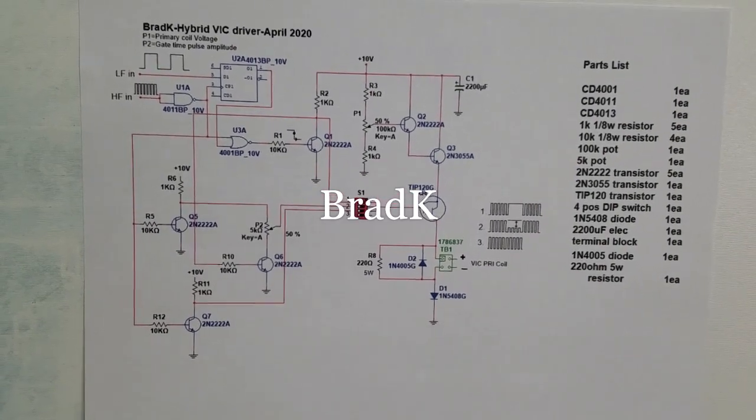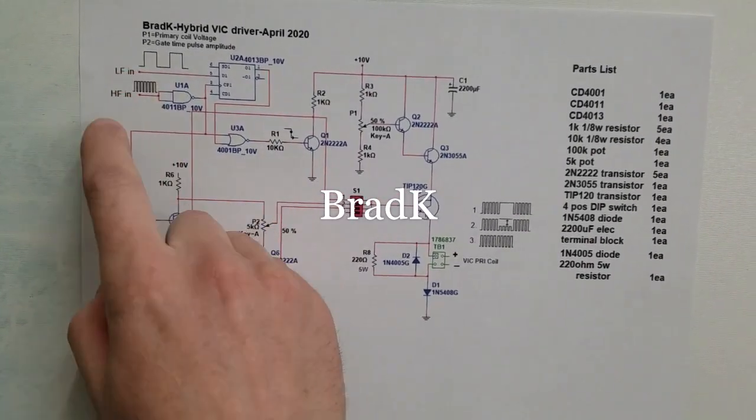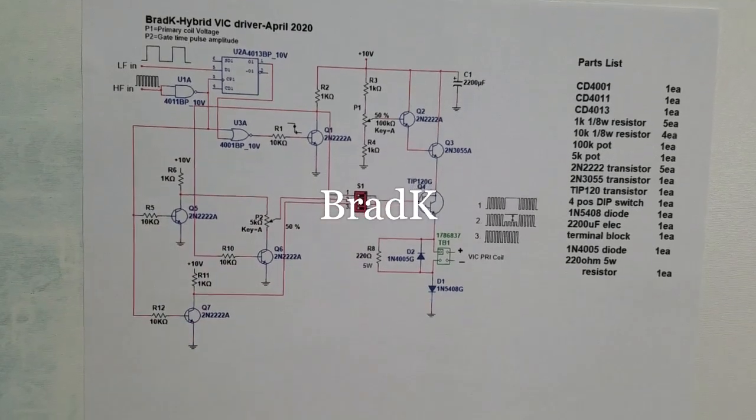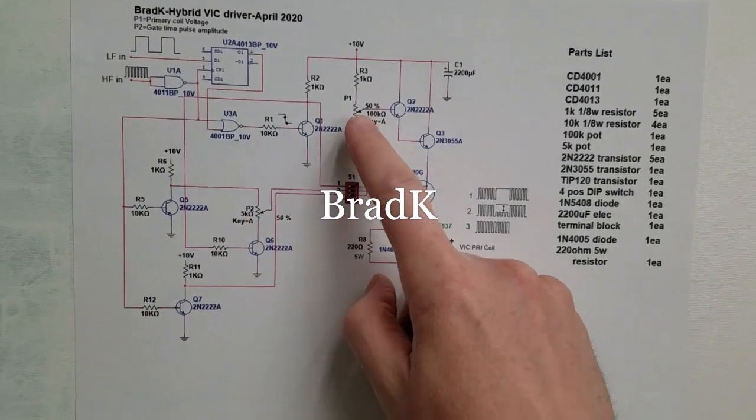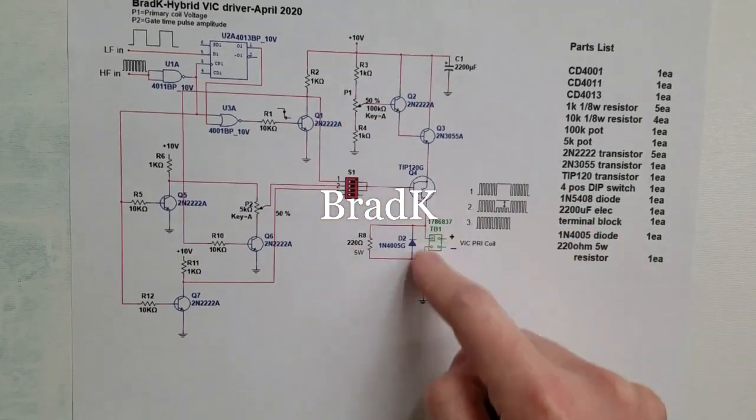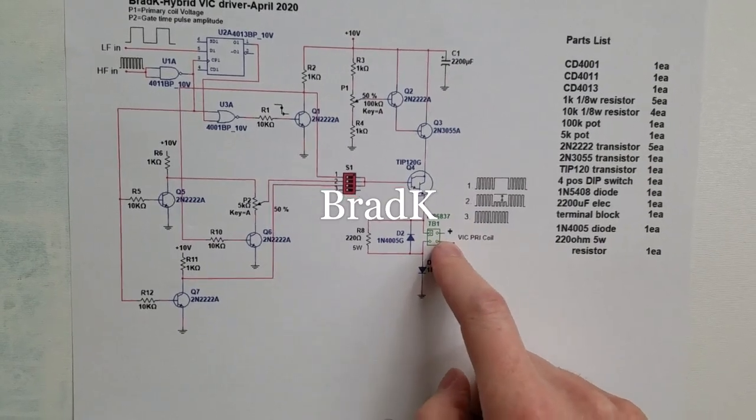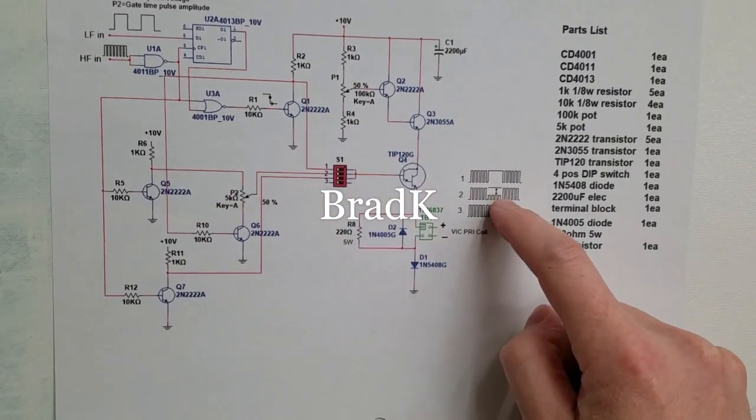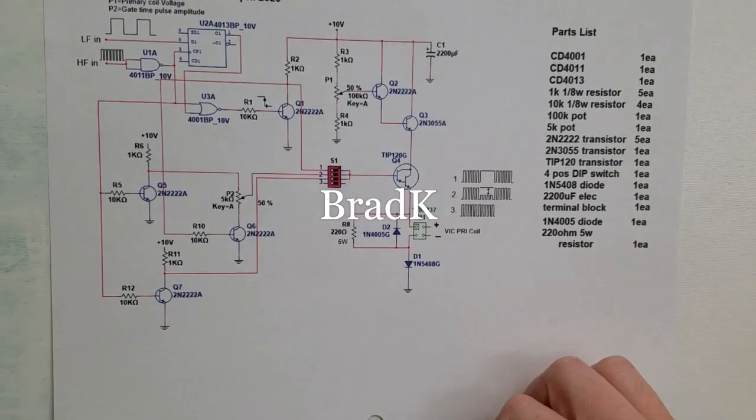Alright, here's a schematic I drew up in MultiSim. You've got your low frequency and high frequency inputs. You've got your DIP switch here. Potentiometer 1 controls the voltage amplitude across the primary coil. Potentiometer 2, which like I said, controls the voltage amplitude of the pulses during the gate time.